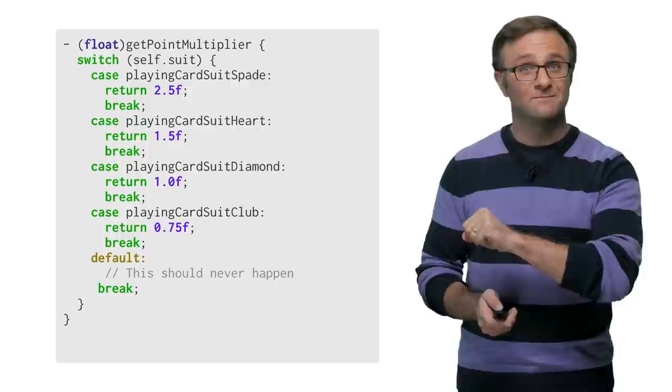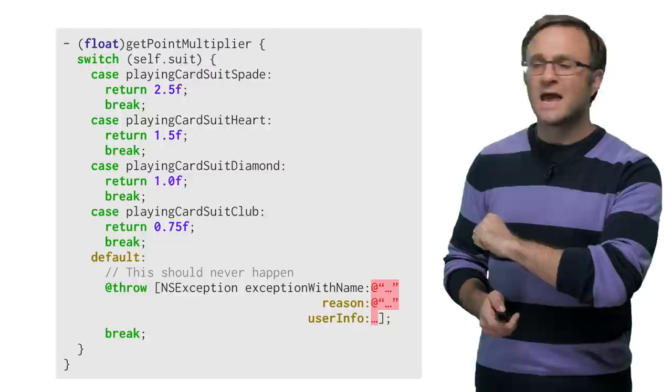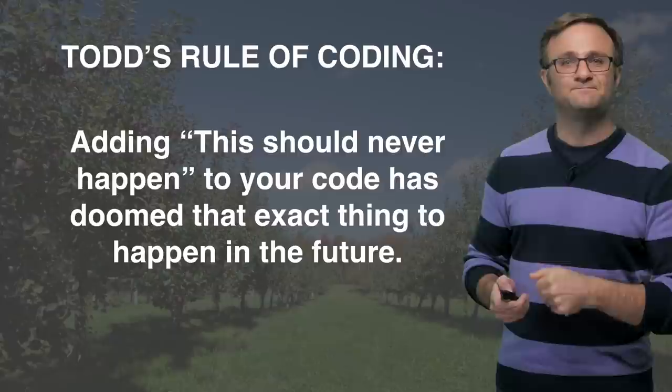But still, we should code defensively, right? So maybe we'll throw an exception here. I'm going to add the comment, this should never happen. And then right below, we'll throw an exception because clearly our game is in a bad state.